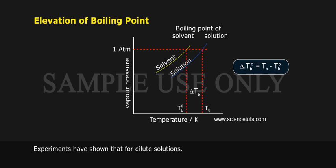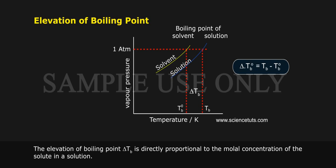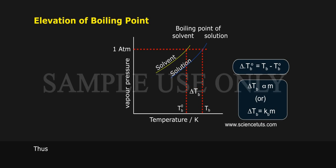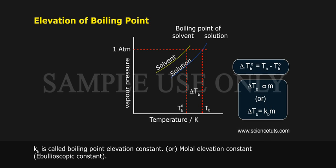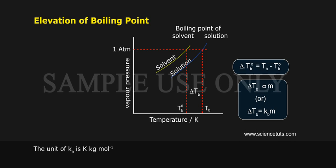Experiments have shown that for dilute solutions, the elevation of boiling point, delta Tb, is directly proportional to the molar concentration of the solute. Thus, delta Tb ∝ m, or delta Tb = Kb·m. Here, m is the molality — the number of moles of solute dissolved in 1 kg of solvent. The constant of proportionality Kb is called the boiling point elevation constant, or molar elevation constant, also known as the ebullioscopic constant. The unit of Kb is K·kg·mol⁻¹.